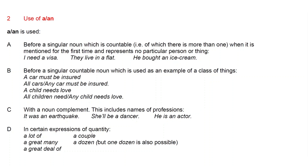A or AN can also be used before a singular countable noun which is used as an example of a class of things. For example: a car must be insured, meaning all cars or any car must be insured. A child needs love — meaning all children need, or any child needs, love.